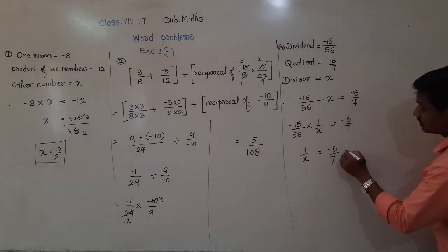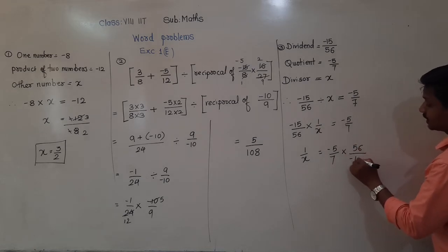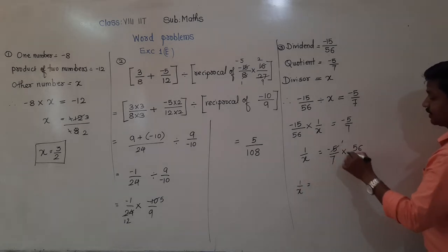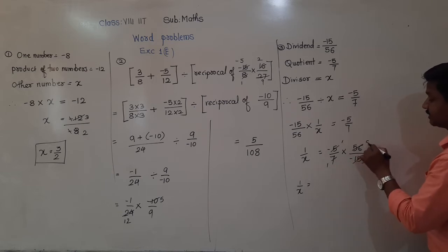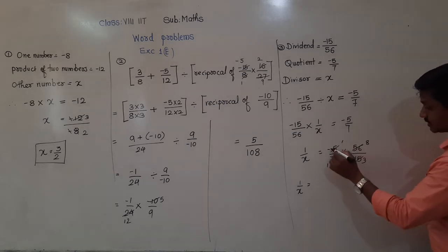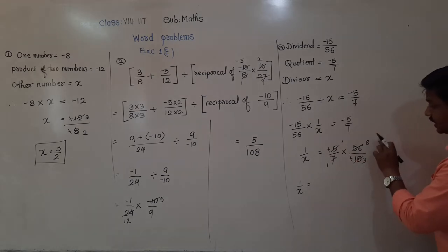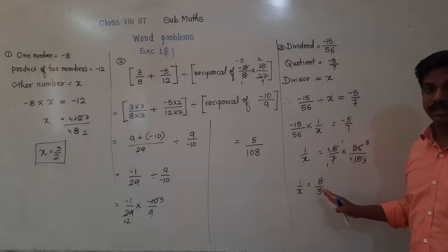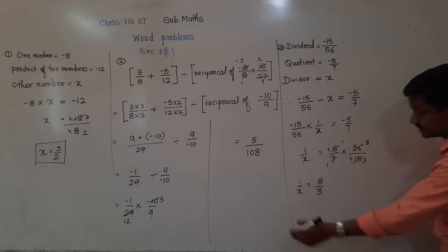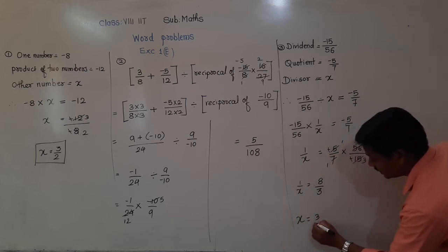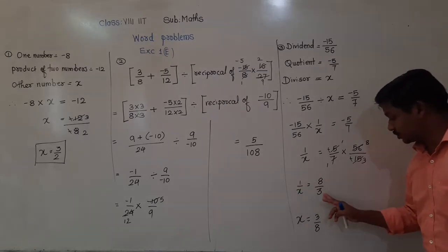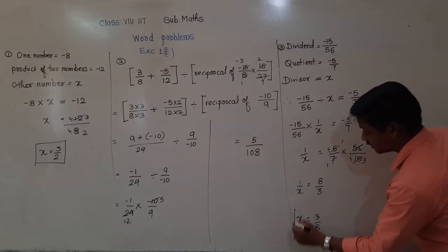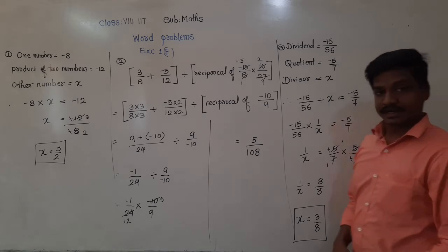Simplifying: 5 goes into 15 three times, 7 goes into 56 eight times, and the two minus signs cancel to give plus. So 1 by x equals 8 upon 3. But we have to find x only, so x is equal to 3 by 8. The divisor which we have to find is 3 upon 8.